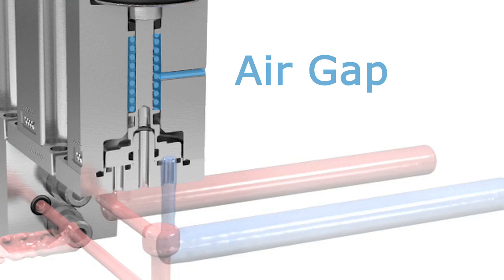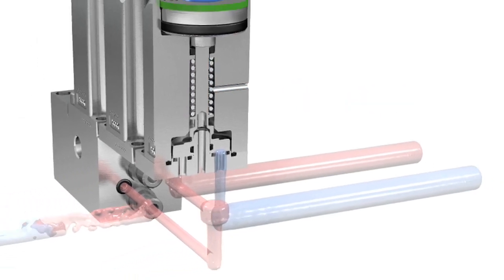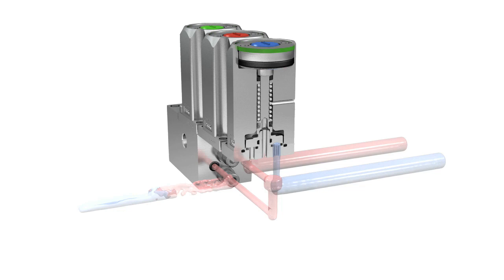Along with double seals, the vented air gap prevents the air supply in the actuator from mixing with system media. This helps preserve the integrity of the analytical result and avoid a potentially combustive mixture.